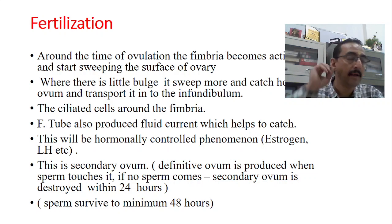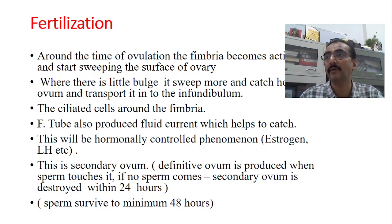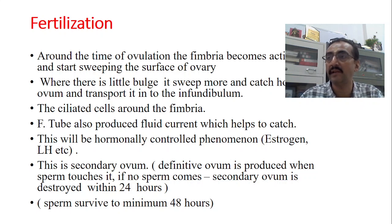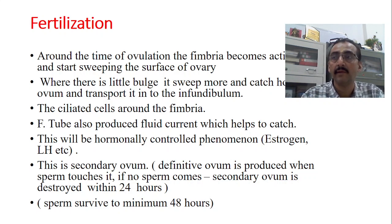The ovum caught by the fimbria and taken into the ampulla is actually called the secondary oocyte. It is called secondary because it is still undergoing division — the second meiotic division has not yet happened; only the first meiotic division has taken place. Therefore it is called the secondary oocyte, not the primary oocyte. The definitive ovum is produced when the sperm touches it — that is when the ovum is called the definitive ovum.